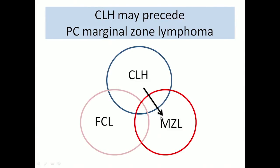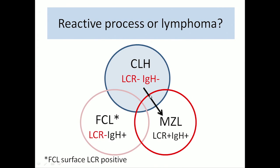Primary cutaneous marginal zone lymphomas, and probably all extranodal MZLs, may go through a chronic reactive phase. How do we distinguish those three conditions which clearly overlap? A reactive process will not have a positive B-cell clone by molecular analysis and no evidence of light-chain restriction. If you find light-chain restriction on a positive clone, you may call it marginal zone lymphoma. Follicle-center lymphomas may have light-chain restriction at the membrane but not by mRNA or protein level. Clonality is what may help us distinguish those conditions.